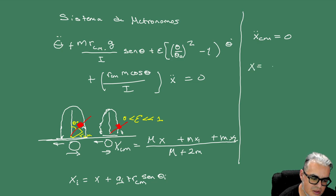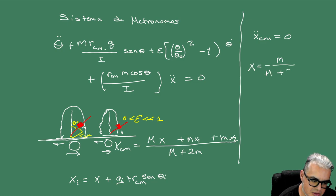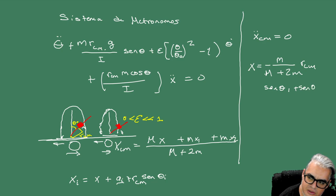Vamos a tomar X como la masa de la base sobre M más 2M·R_cm, por el seno de theta_1 más el seno de theta_2.